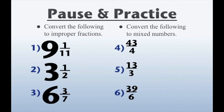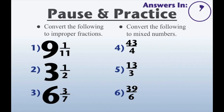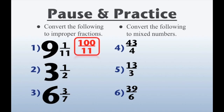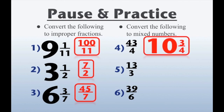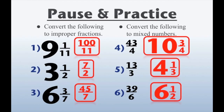So here's your pause and practice. Just pause and practice. When you're done, unpause the video. After a 3, 2, 1 countdown, your answers will be displayed. Okay, so let's go over our answers. Number 1 is 100 over 11. Number 2 is 7 over 2. Number 3 is 45 over 7. Number 4 is 10 and 3 fourths. Number 5 is 4 and 1 third. And number 6 is 6 and 1 half.